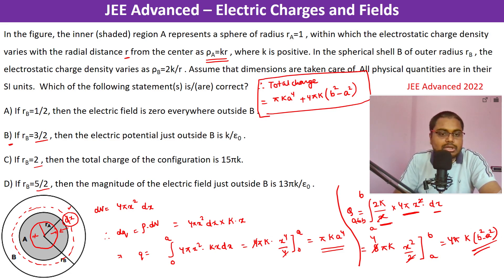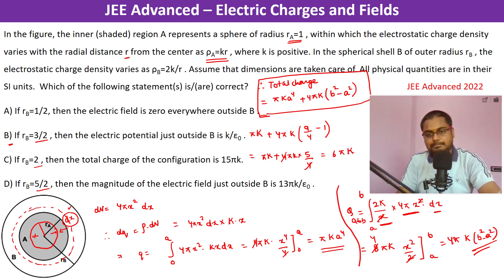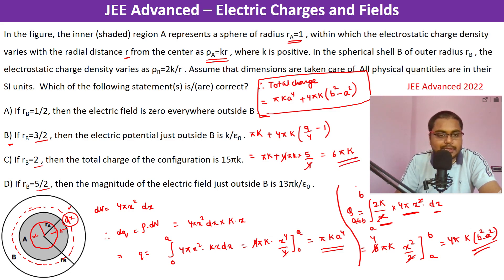For option B, with r_b = 3/2 and a = 1: total charge = πk·(1)⁴ + 4πk·((3/2)² - 1²) = πk + 4πk·(9/4 - 1) = πk + 4πk·(5/4) = πk + 5πk = 6πk.